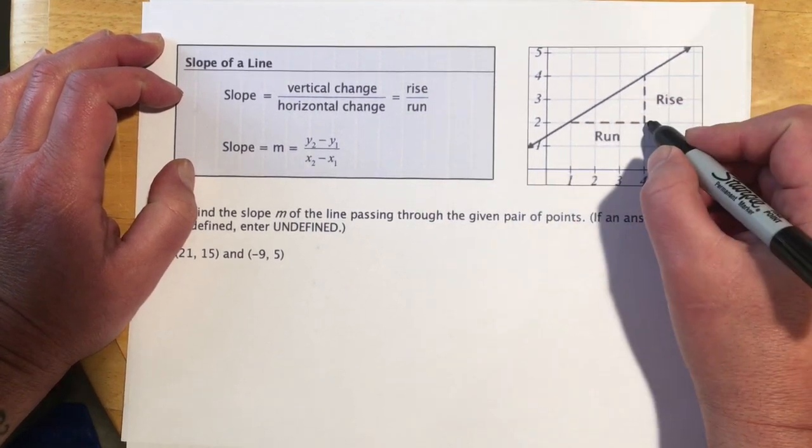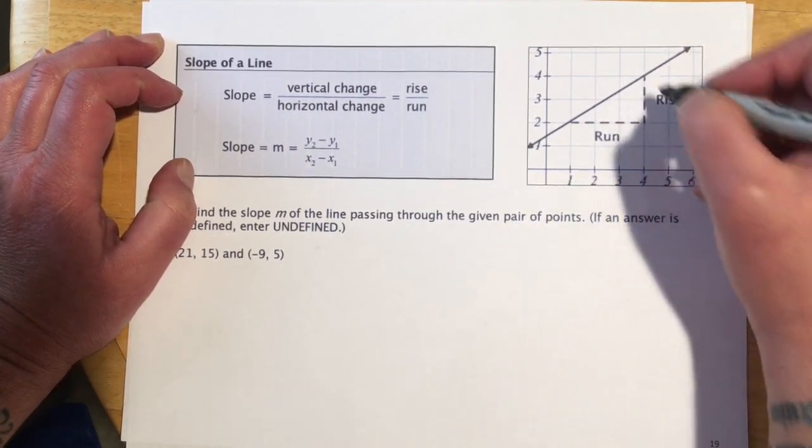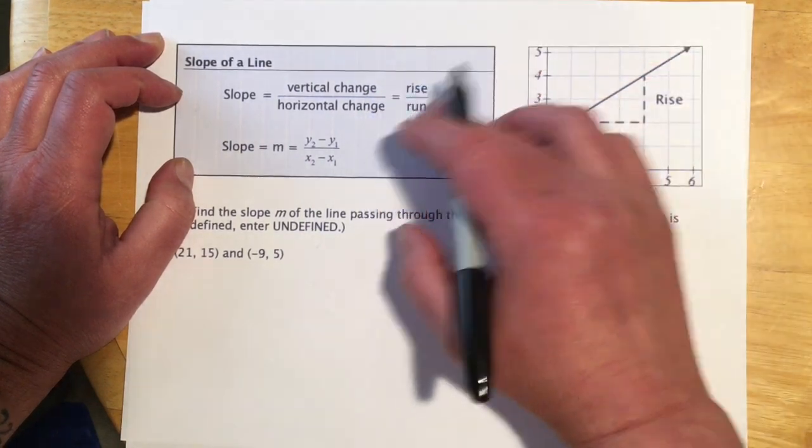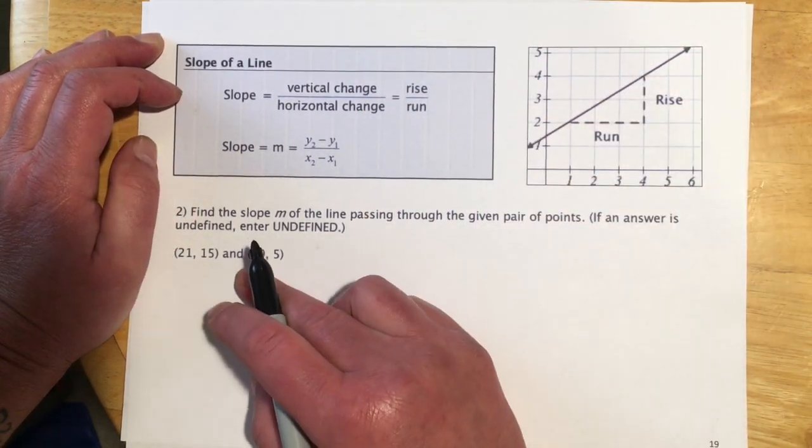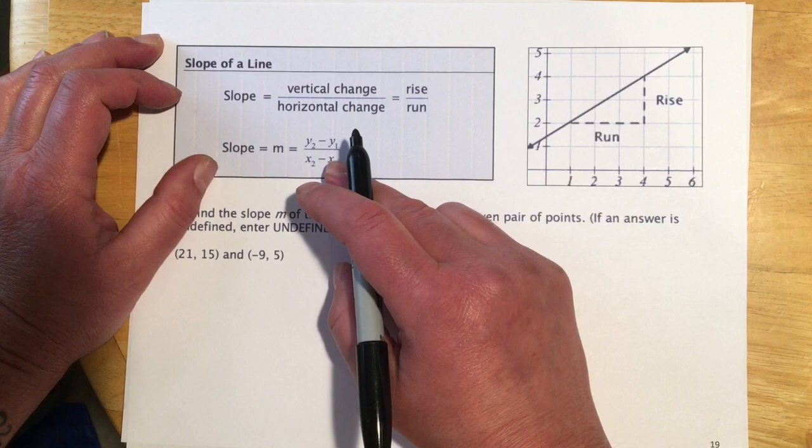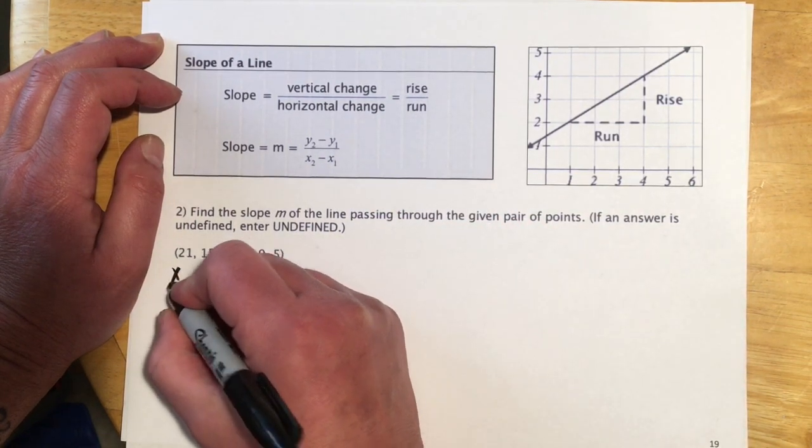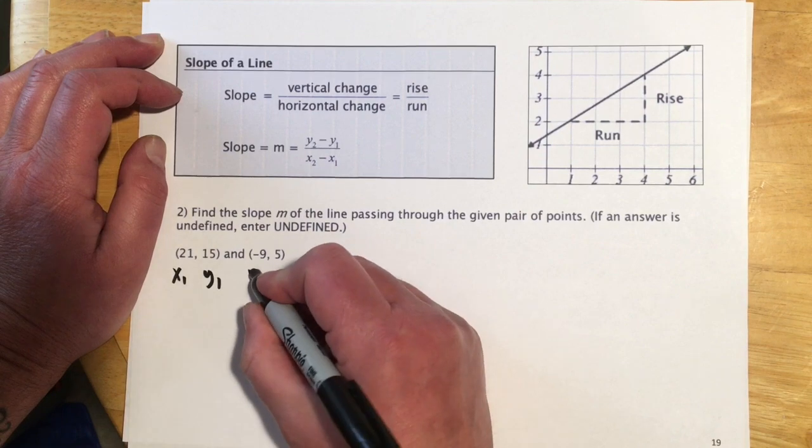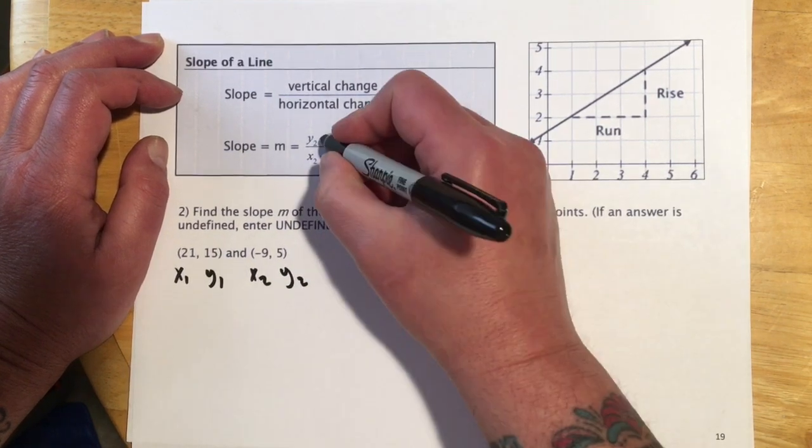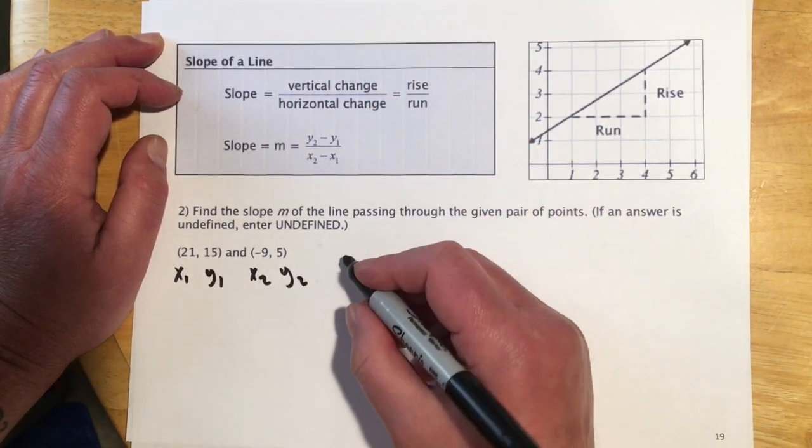And for the rise over run, here's just kind of a little picture of what it would look like. Run is our horizontal change. And then rise is our vertical change. So if I'm given a picture, I definitely like the rise over run idea. If I'm given an ordered pair, then I definitely like the formula version. So what we'll do is we'll just treat this as our x1, y1. And this one is our x2, y2.